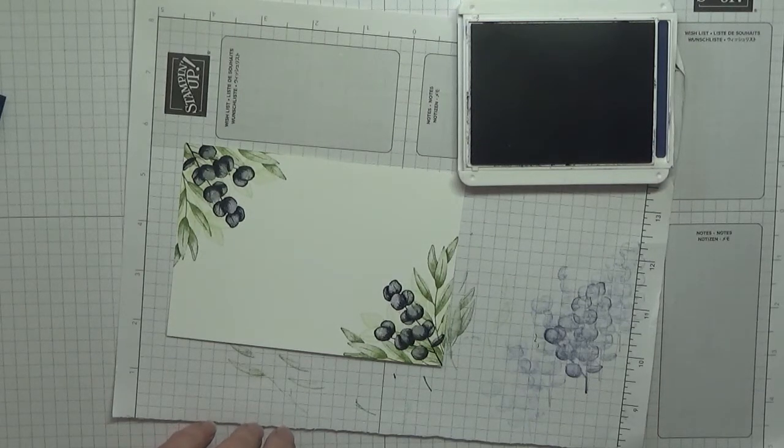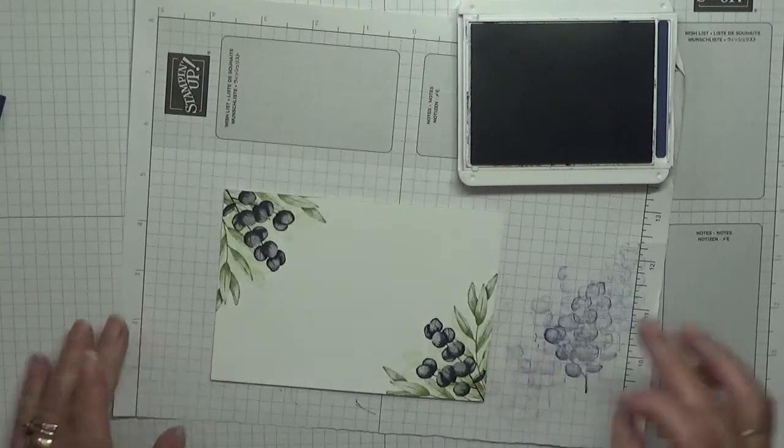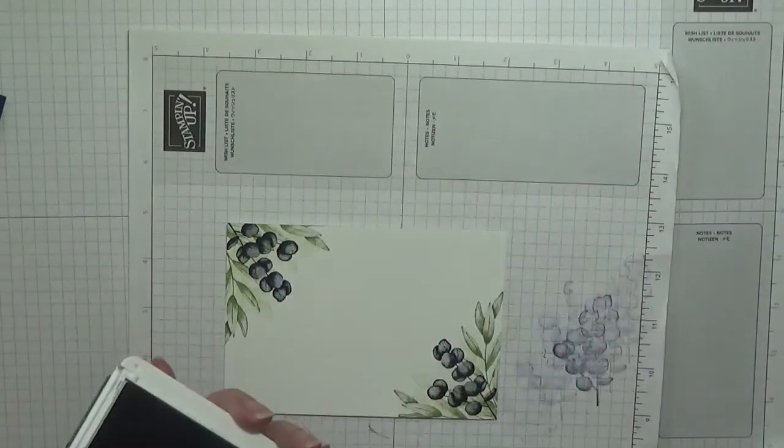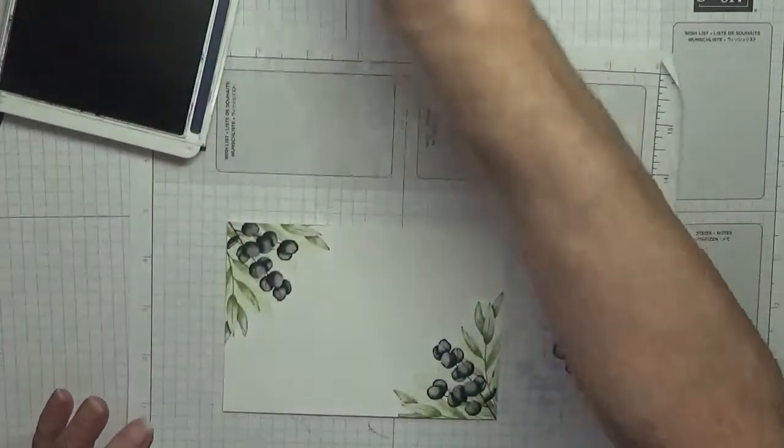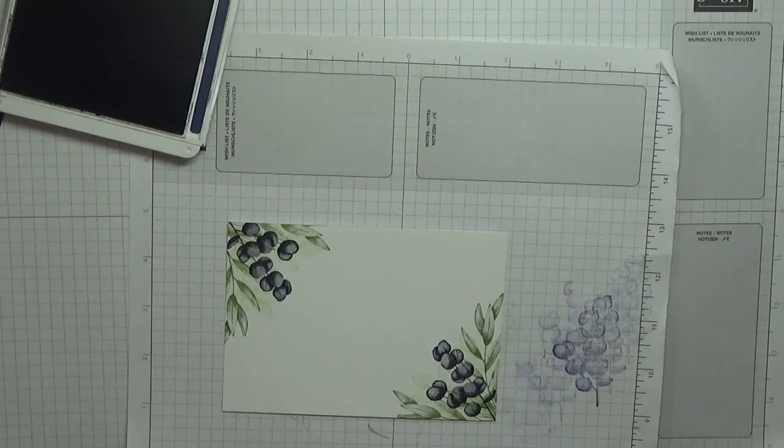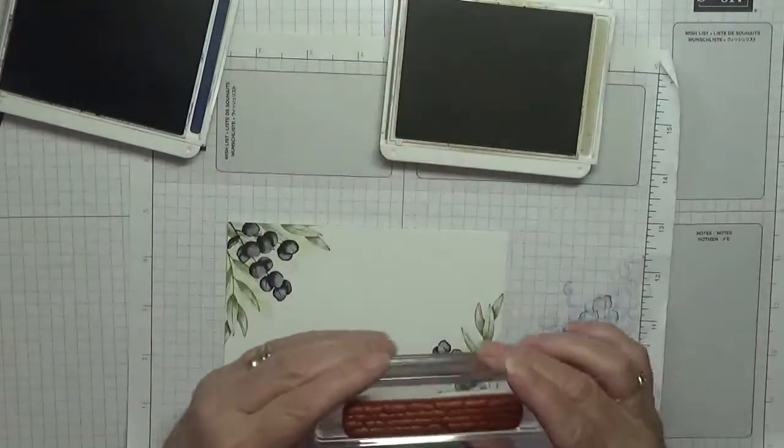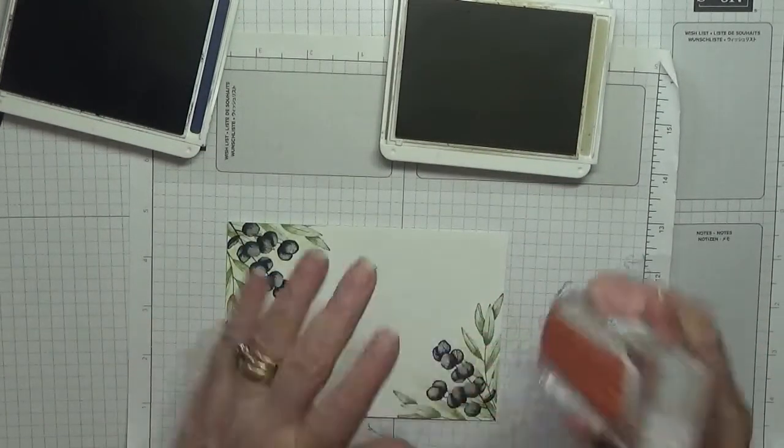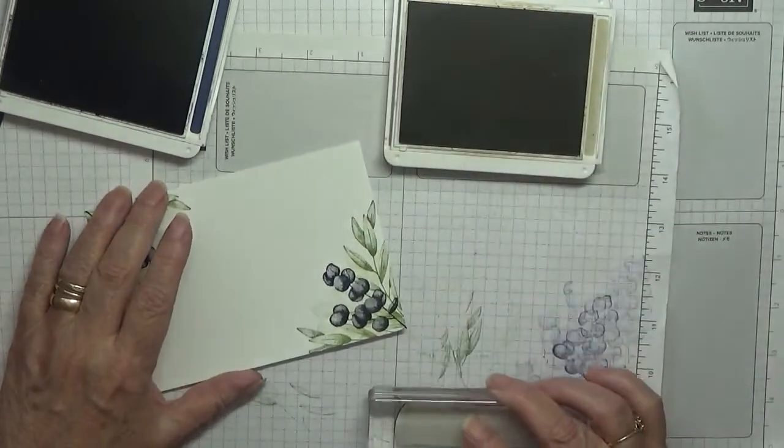Clean that off. Right, no I'll leave that open because I need that in a minute. Right, I've got Crumb Cake here and the script stamp. I'll have to see if I've got it the right way up.